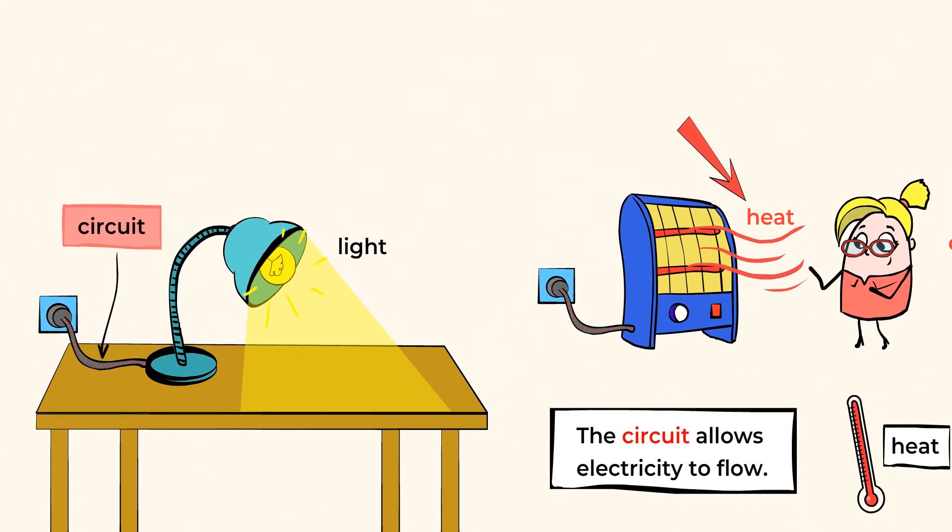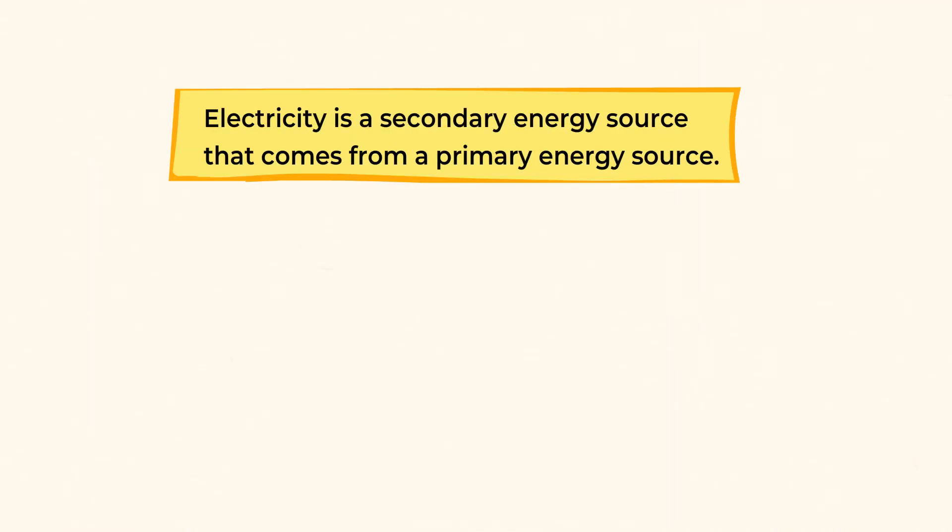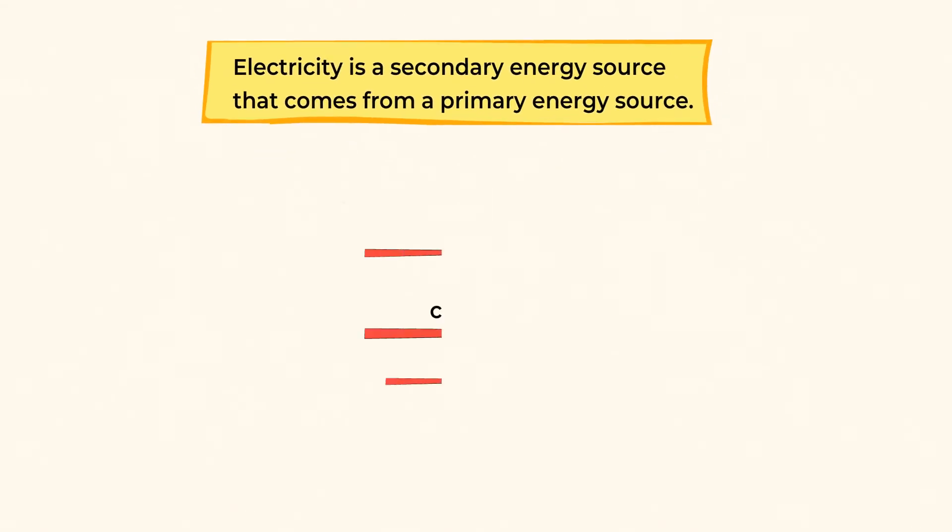Okay, so when a circuit is created, electricity can flow through it and we can use it for many things in our lives. But where do we get the electricity from in the first place? Well, it's good to know that electricity comes from a secondary energy source. This means that our electricity comes from the conversion of other sources of energy.